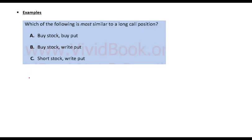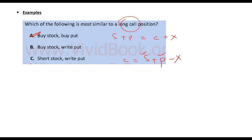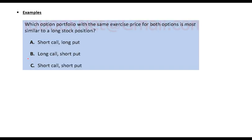Which of the following is more similar to a long call option? Again, S + P = C + X. To isolate call: C equals S + P minus X. So buy a stock and buy a put option — that is the answer. Which option portfolio with the same exercise price for both options is more similar to a long stock position? The answer is long call and short put.